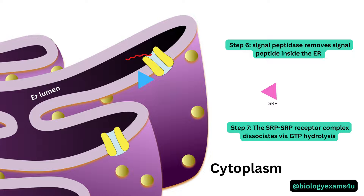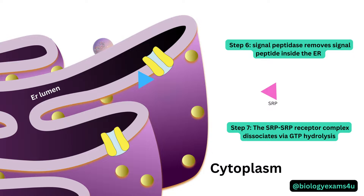Once inside the lumen, following protein synthesis and translocation, a protein destined for secretion undergoes proper folding and modifications with the help of chaperones and folding enzymes. Modifications include disulfide bond formation and initial glycosylation. Finally, the folded, processed protein is packaged in vesicles to the Golgi apparatus, further modified there, and secreted out of the cell by exocytosis.